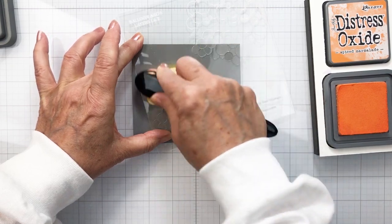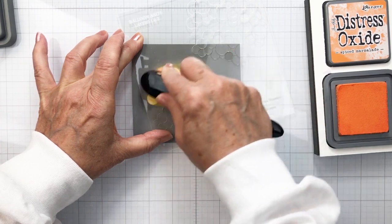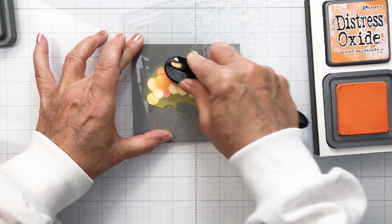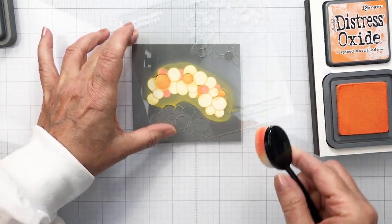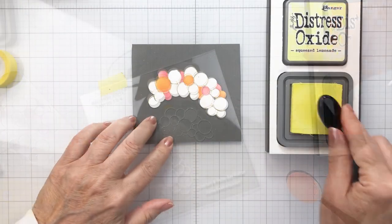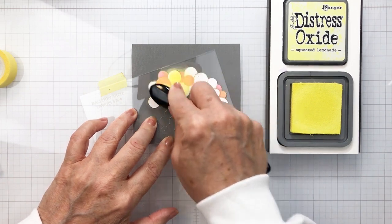This portion of this first layering stencil is going to allow me to color in the next section of the open balloons. Now I'm going to add a little bit of spice marmalade here, kind of trying to go in a little bit of a rainbow order here using my Honey Bee blending brushes again. You can see I'm also using the ink stand to hold my ink pads in place, and now I'm going in with a little bit of squeezed lemonade.